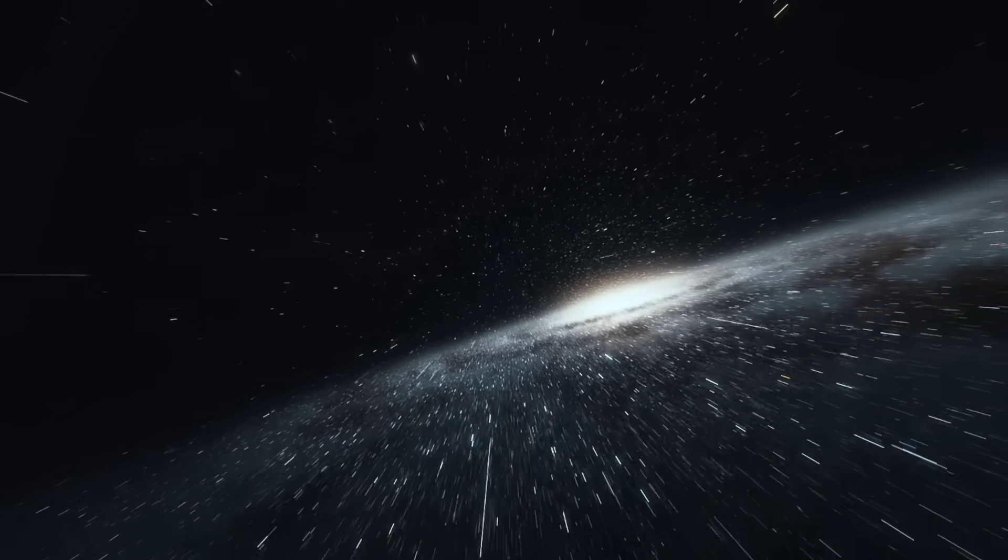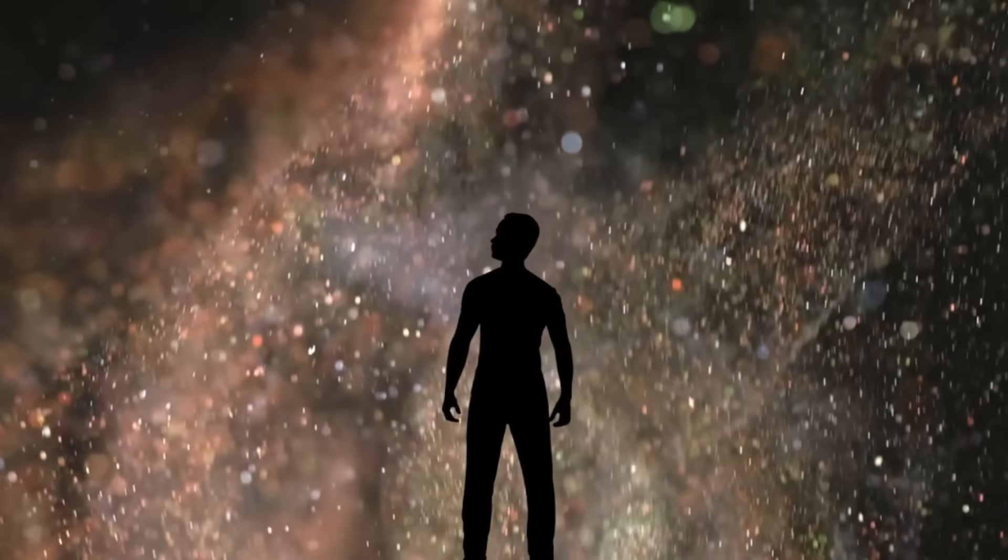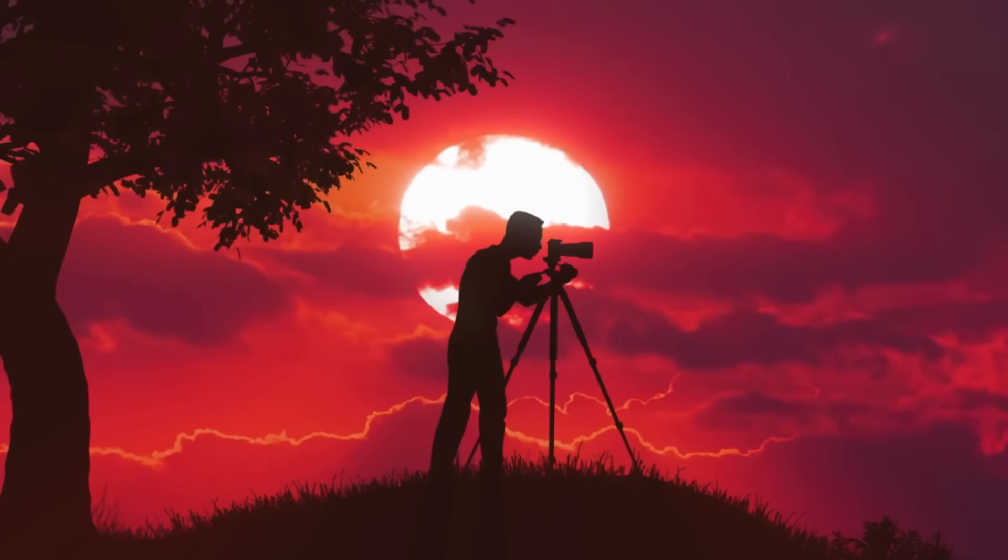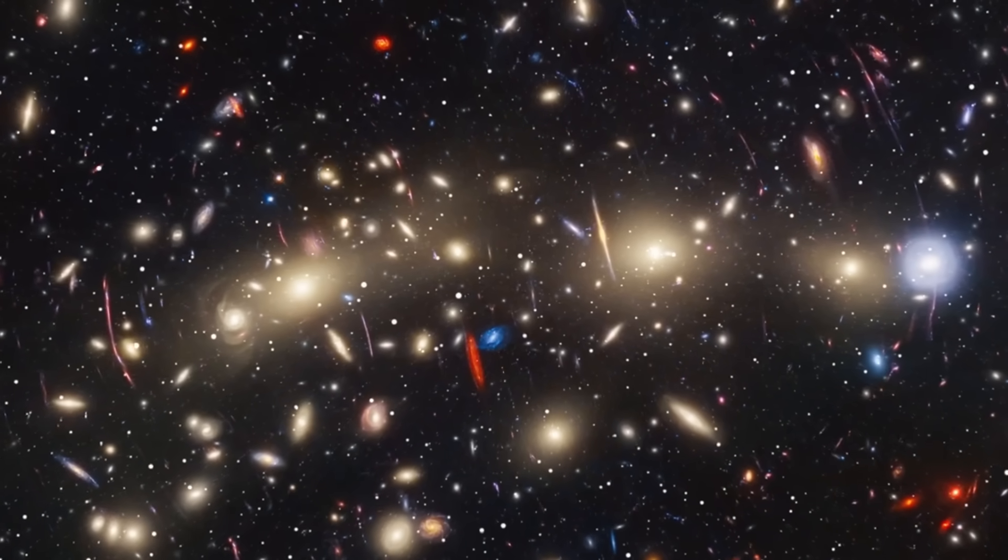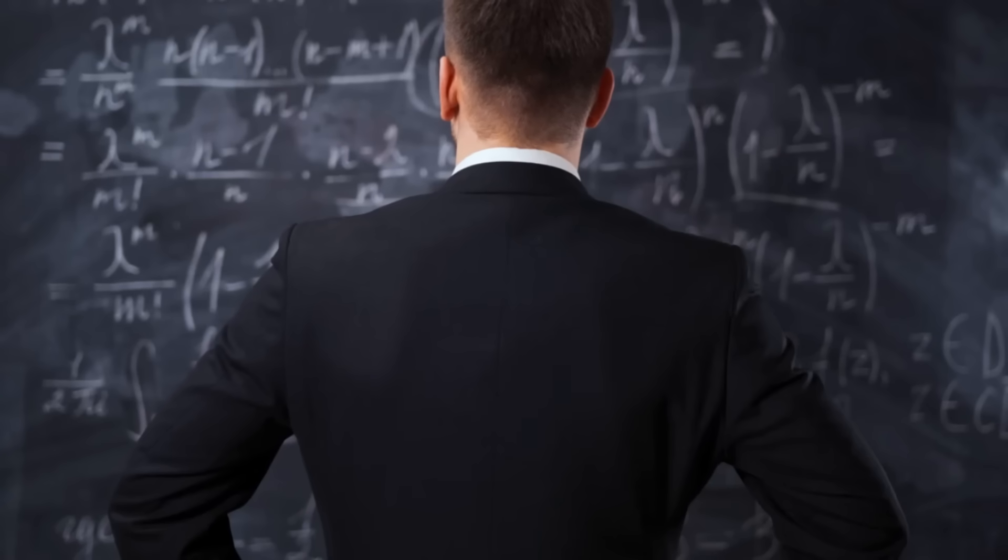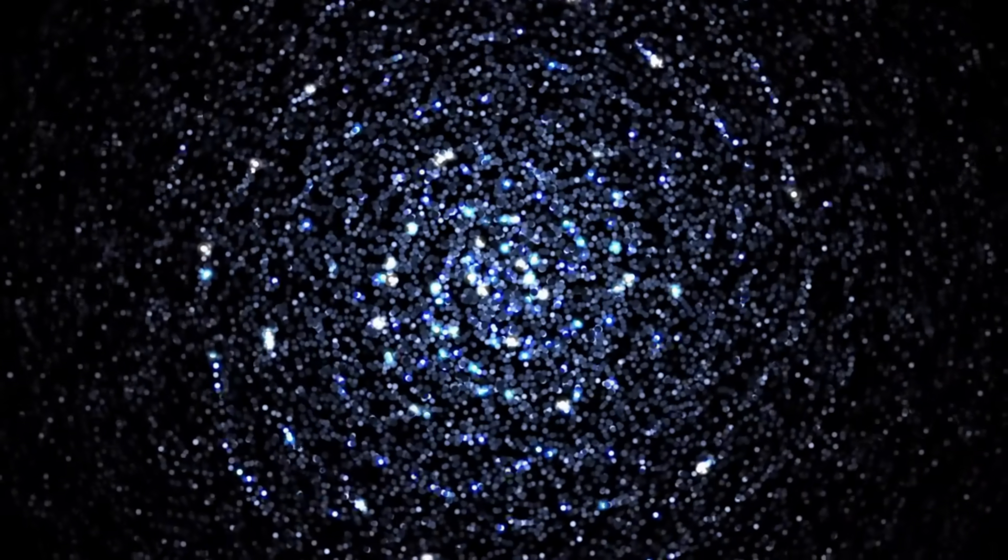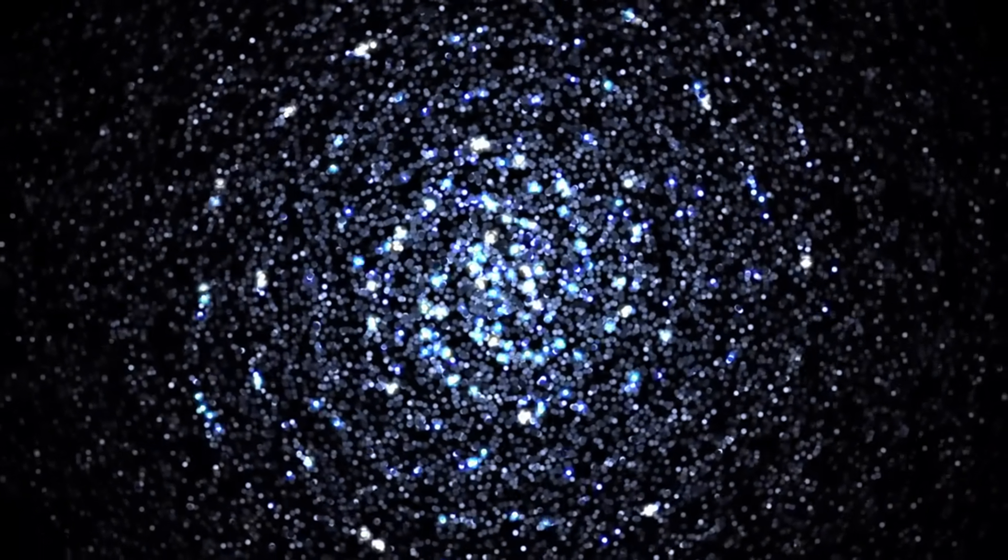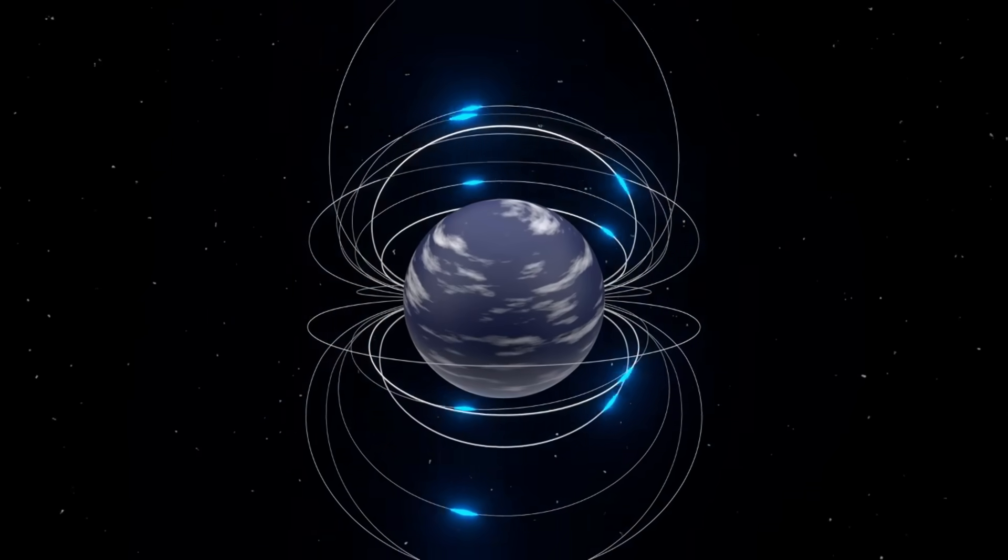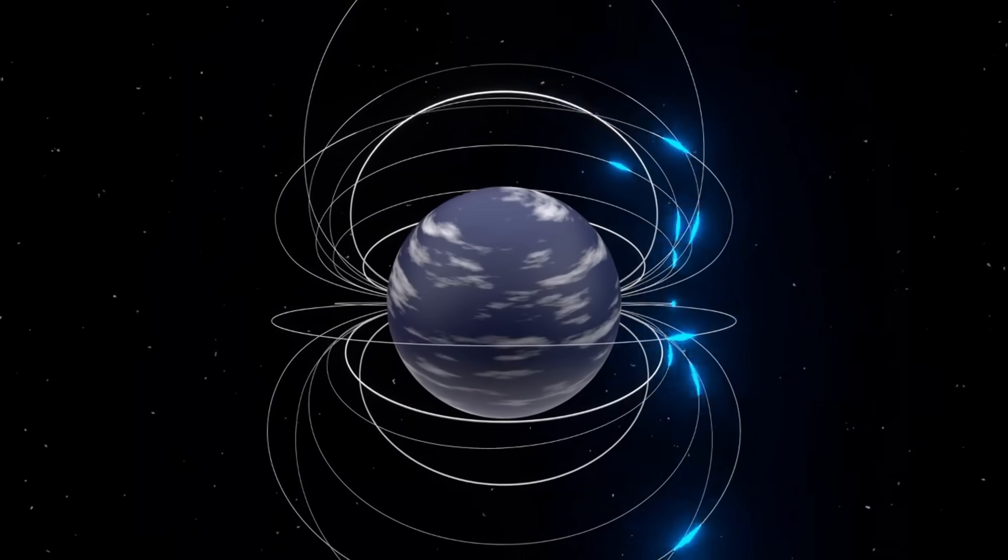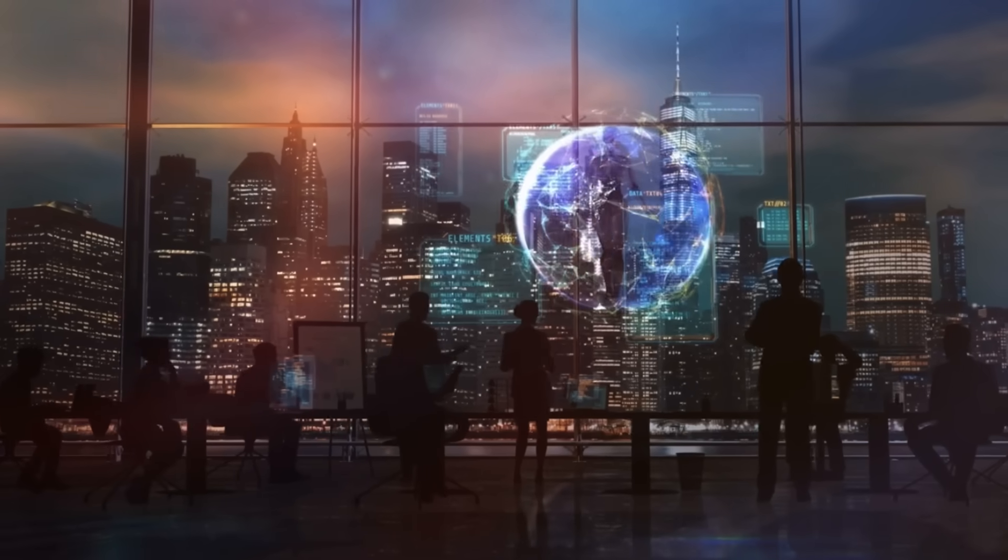This is what scientists are calling the impossible early galaxy problem. How did these galaxies get so big so fast? Now, this is where it gets really controversial. One study took Webb's data and tried to estimate the ages of the individual stars inside some of these ancient galaxies. Their results were staggering. The analysis suggested some stars were potentially hundreds of millions of years older than the universe was supposed to be at that point in time. Let that sink in. It's like finding a human fossil that appears to be older than the rock layer it was found in. It just doesn't make sense.